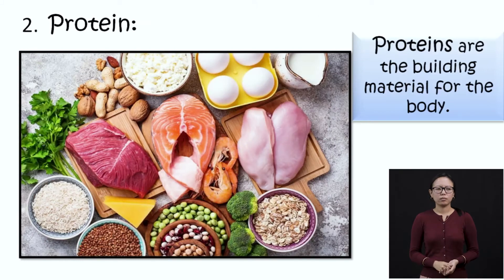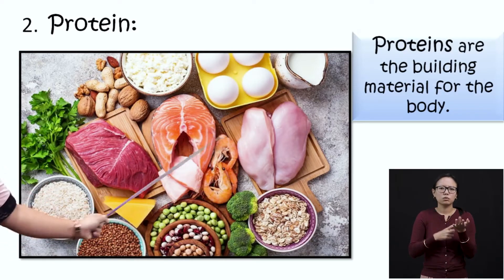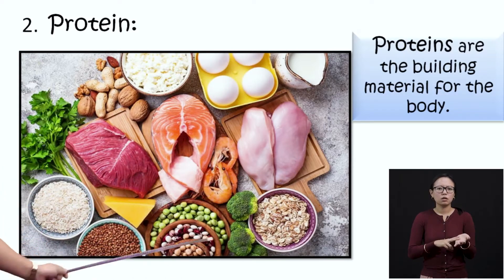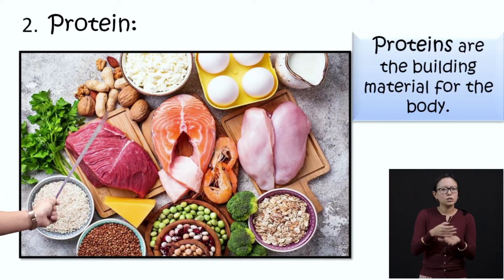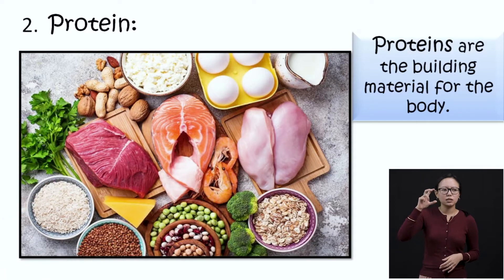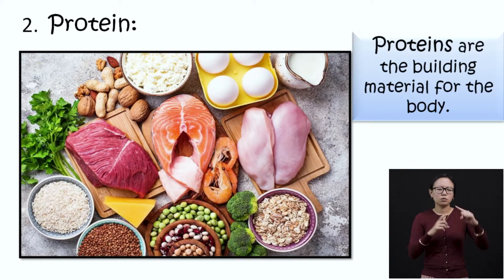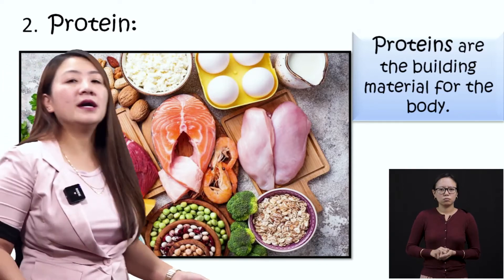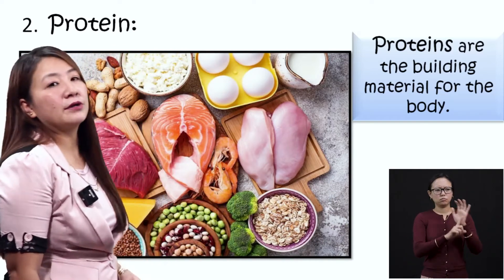Then next we have protein. What are proteins? Proteins are contained in food items like peas, meat, fish, egg, and all these nuts. All these types of food contain proteins. And you know that proteins are the building material for the body — it is because of protein that we grow.